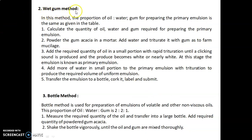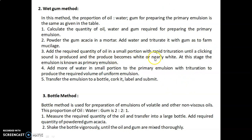The second method is the wet gum method. The proportions of oil to water to gum for preparing the primary emulsion are the same as given in the table. First, calculate the quantities required. Then powder the gum acacia in a mortar, add water, and triturate to form a mucilage. Add the required quantity of oil in small portions with rapid trituration until a clicking sound is produced and the product becomes white or nearly white — at this stage the emulsion is known as the primary emulsion.